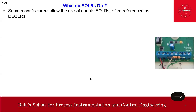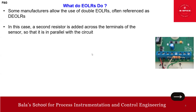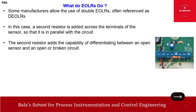Some manufacturers allow the use of double EOLR, known as DEOLRS — double end-of-line resistors. In this design, a second resistor is added across the terminal in addition to the cable end resistor. It is terminated across the terminal of the sensor so that it is in parallel with the circuit.